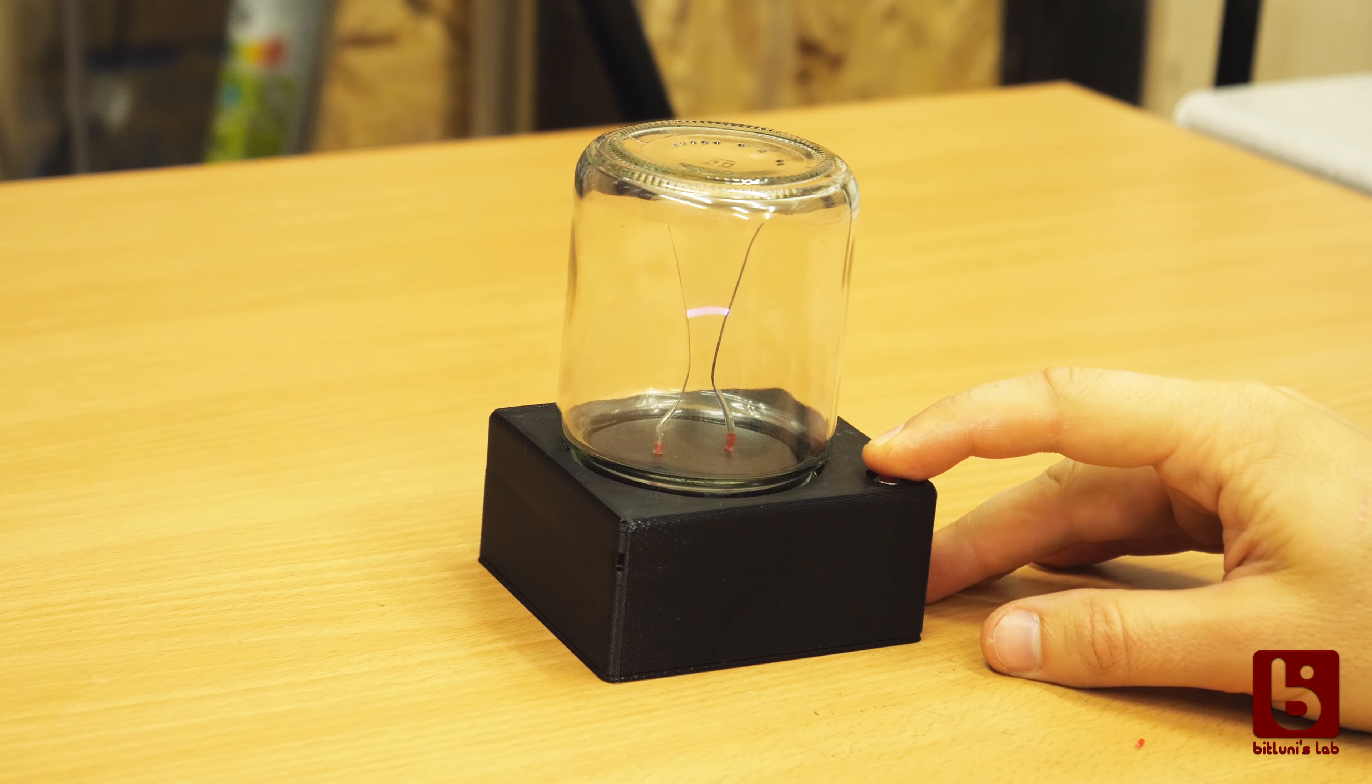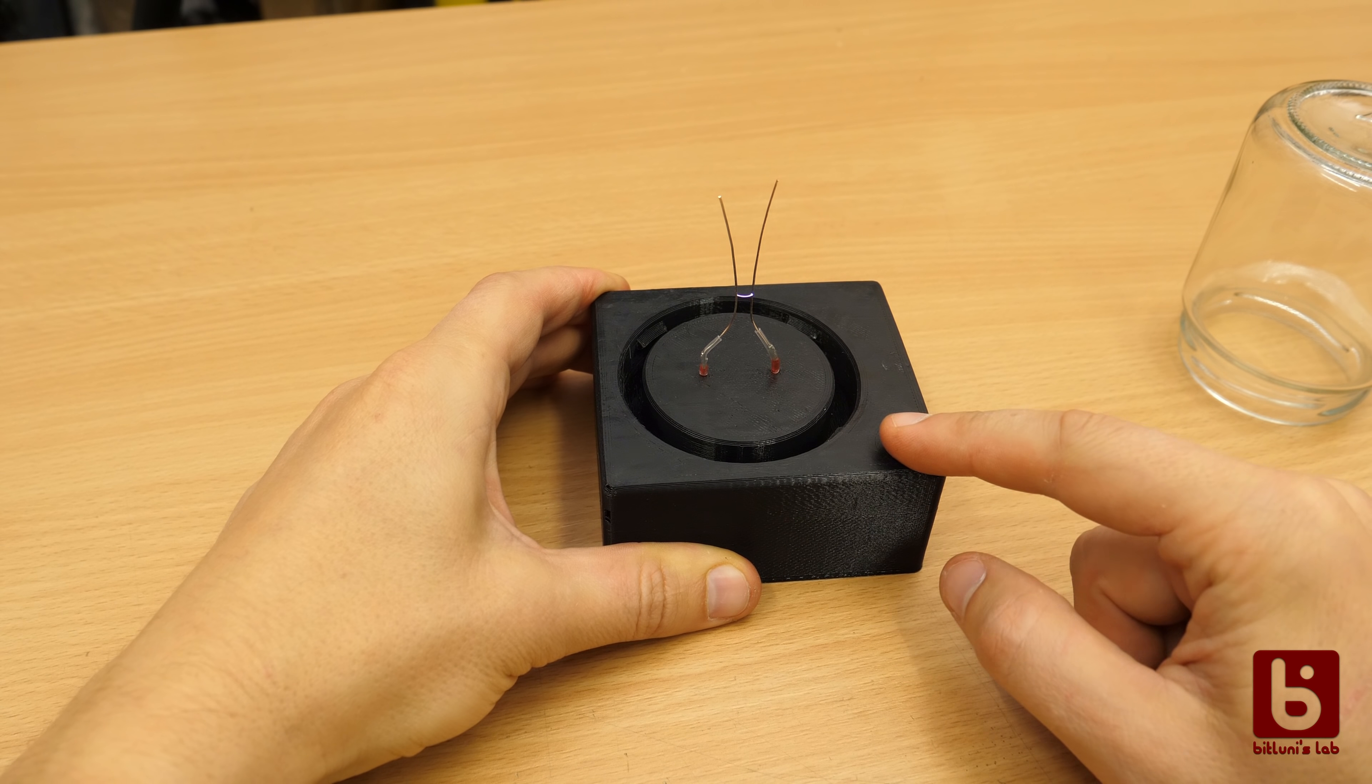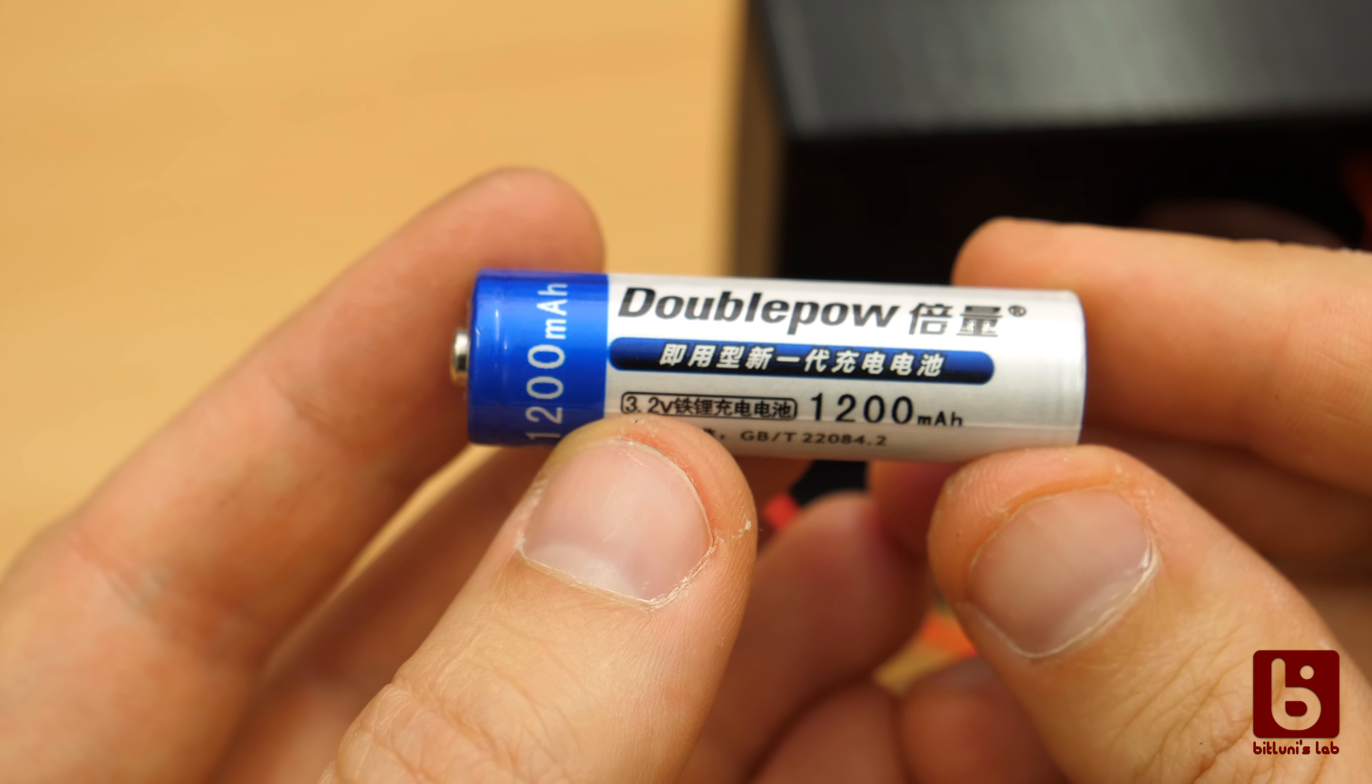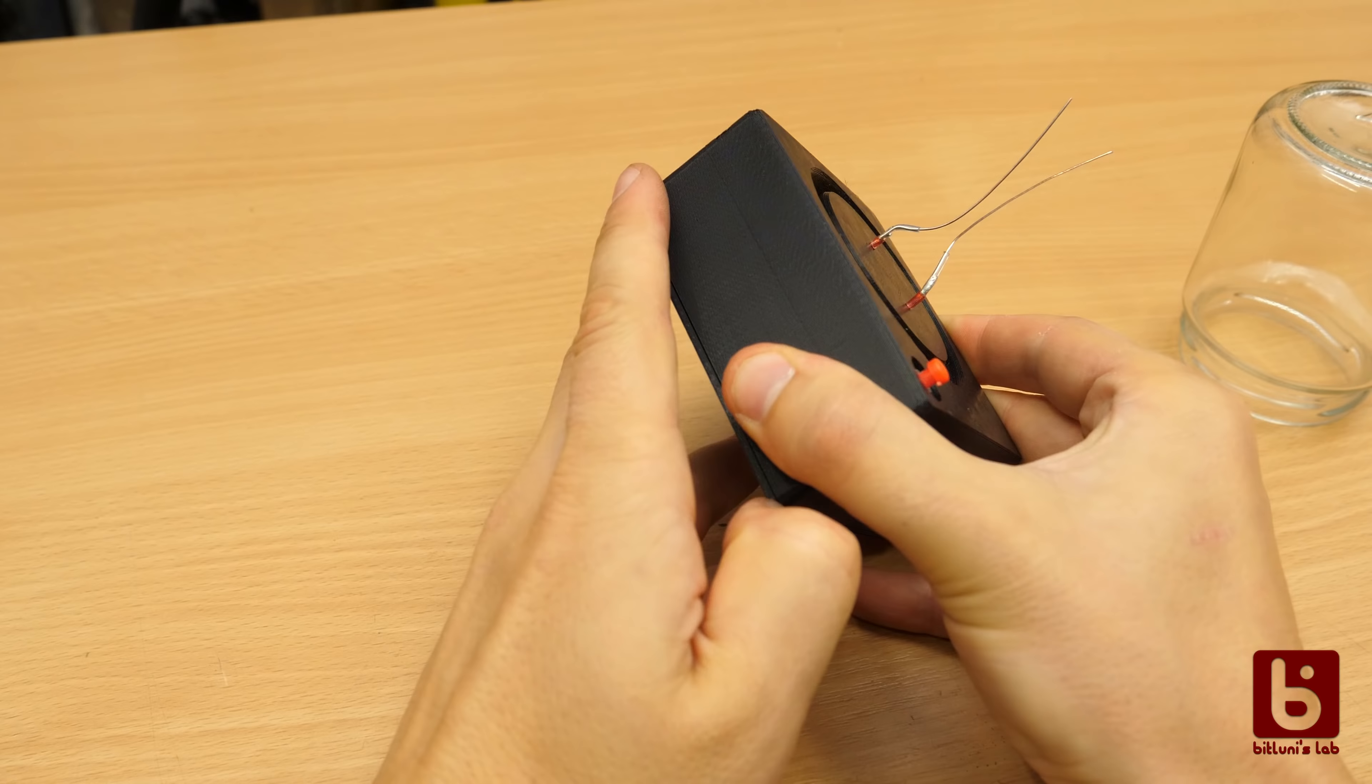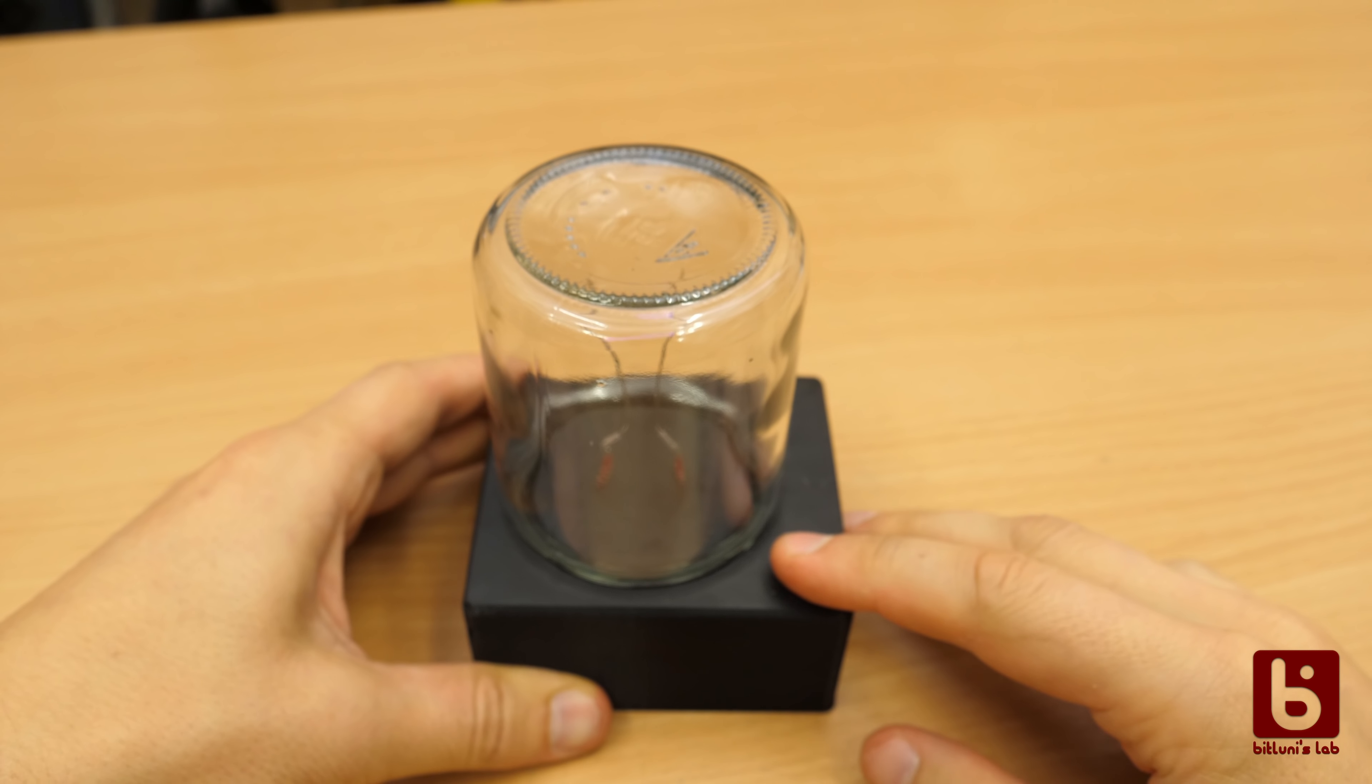By the way, I kept the jar in my design. If you don't get enough current out of AA batteries, you can also use lithium iron phosphate batteries like I do here. These two come even in the AA form factor, so they fit nicely also in the case.